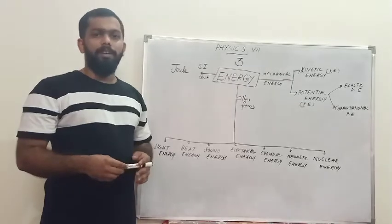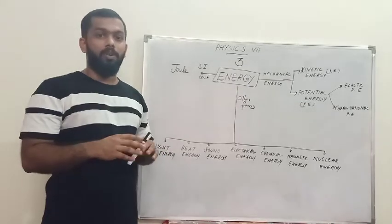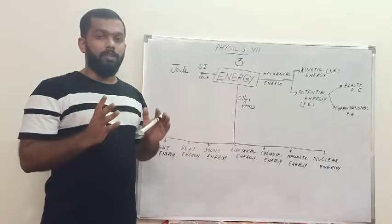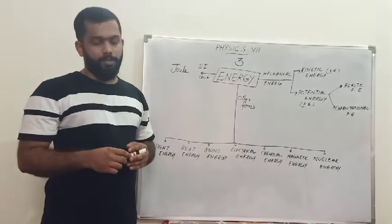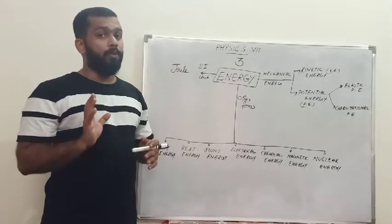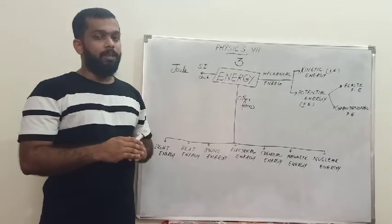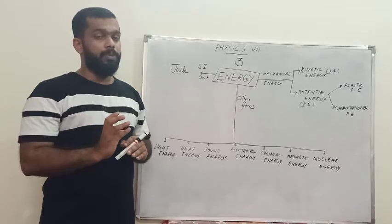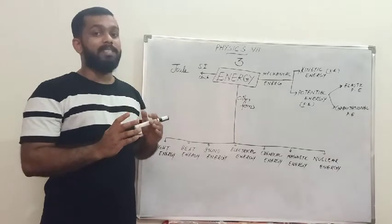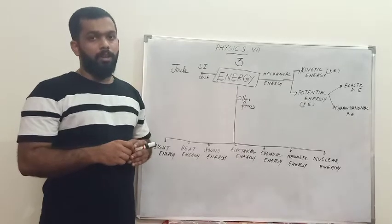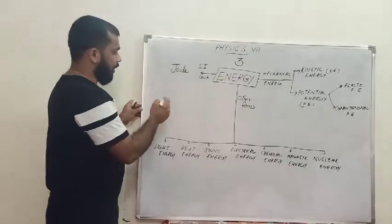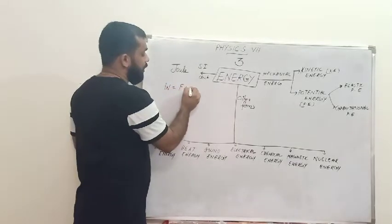What do you mean by work? In your daily life you might have heard about so much work, but in physics if we have to consider an action as work, we have two conditions. First, we have to apply some amount of force on an object. Second, after getting that force, the object should move in the same direction of the applied force. So work is the product of force and displacement.